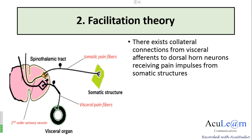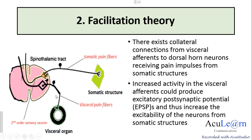The second theory is the facilitation theory. There exists a collateral connection from the visceral afferents to the dorsal horn neurons receiving pain impulses from the somatic structure. Whenever there is increased activity of the visceral afferents — as in involvement of the viscera — the pain fibers are activated and produce excitatory post-synaptic potentials, increasing the excitability of neurons of the somatic structures. Thus the visceral pain fibers facilitate the pain fibers coming from the somatic structure. This is called the facilitation theory.